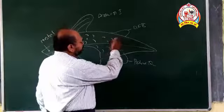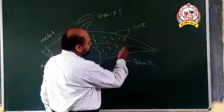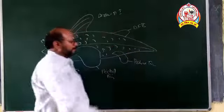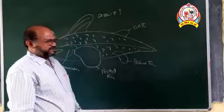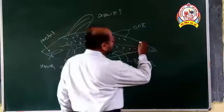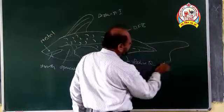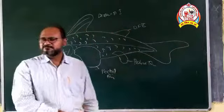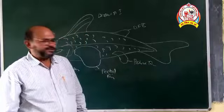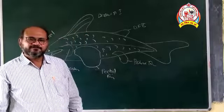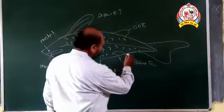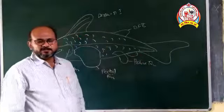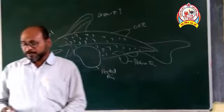The tail portion of the body forms a caudal fin — a semicircular fin supported with fin rays. Lastly, a small adipose fin is present in some species on the body.